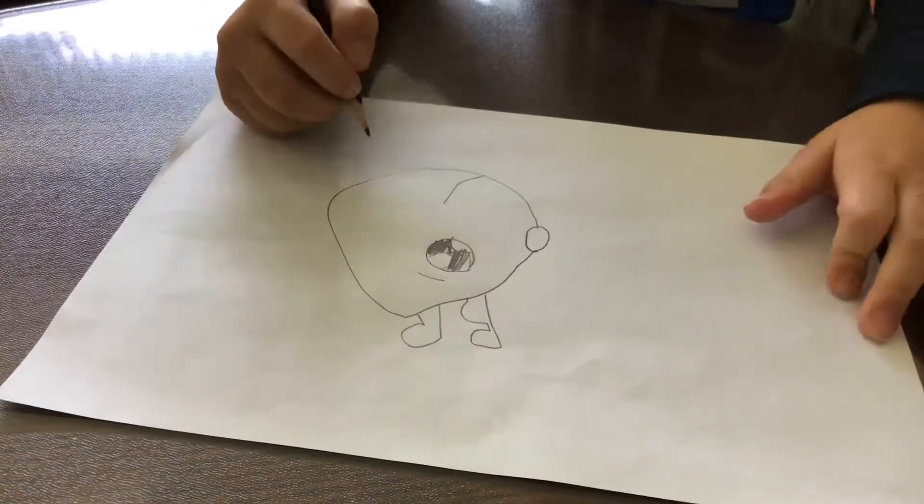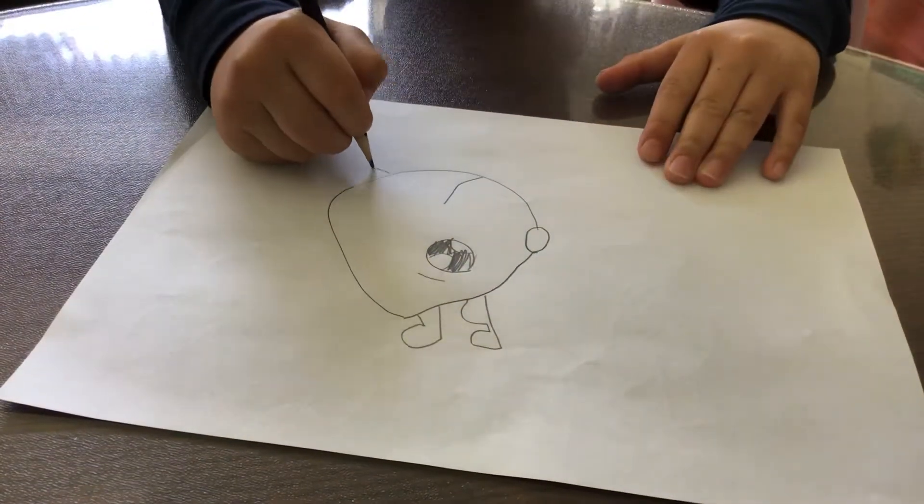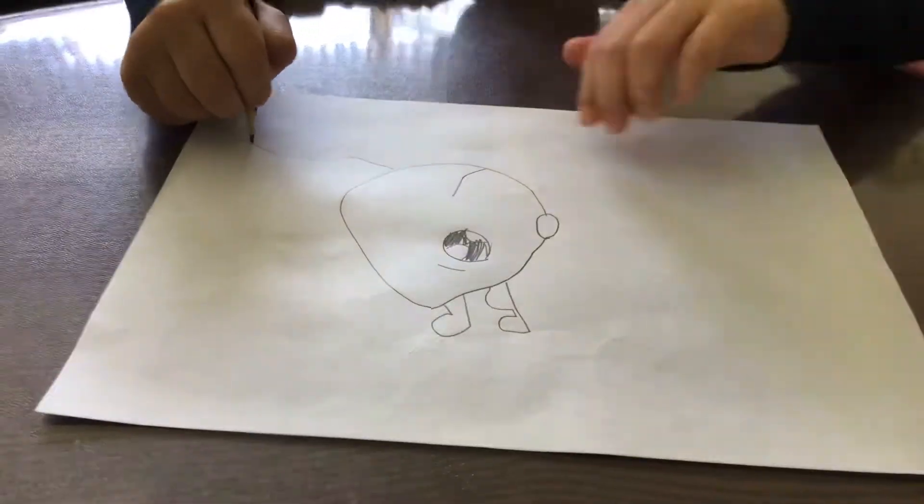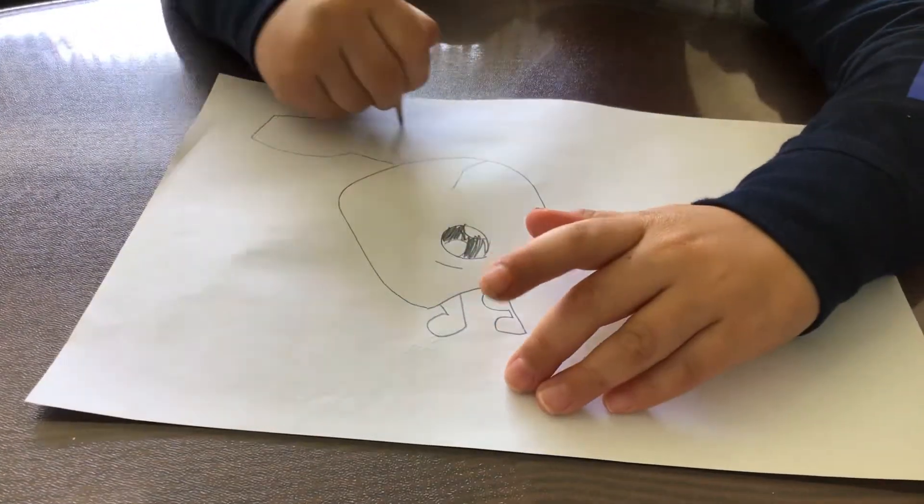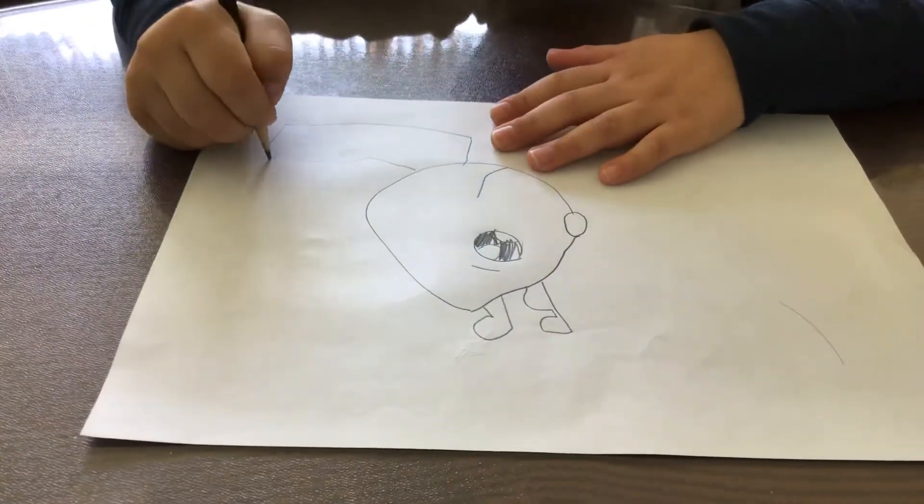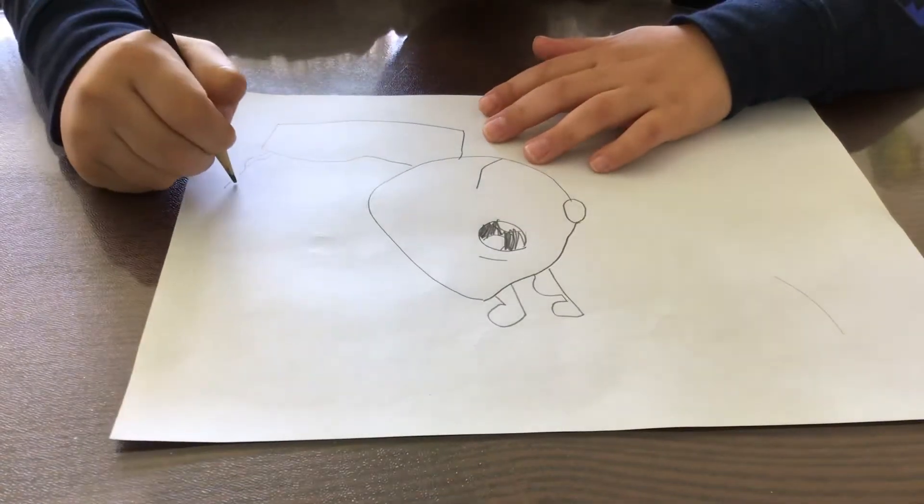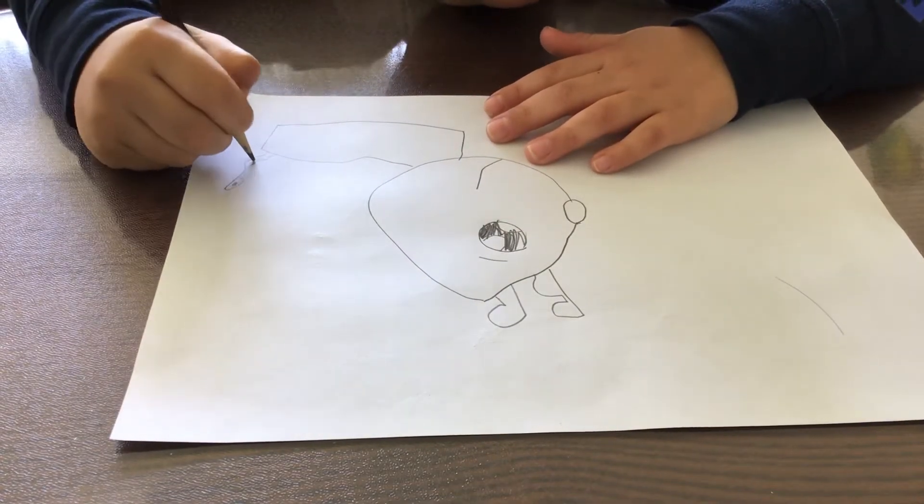Then we draw his body. We just do like this, a straight line, go back, and just draw his tail like this, and like this, and just little dots here.